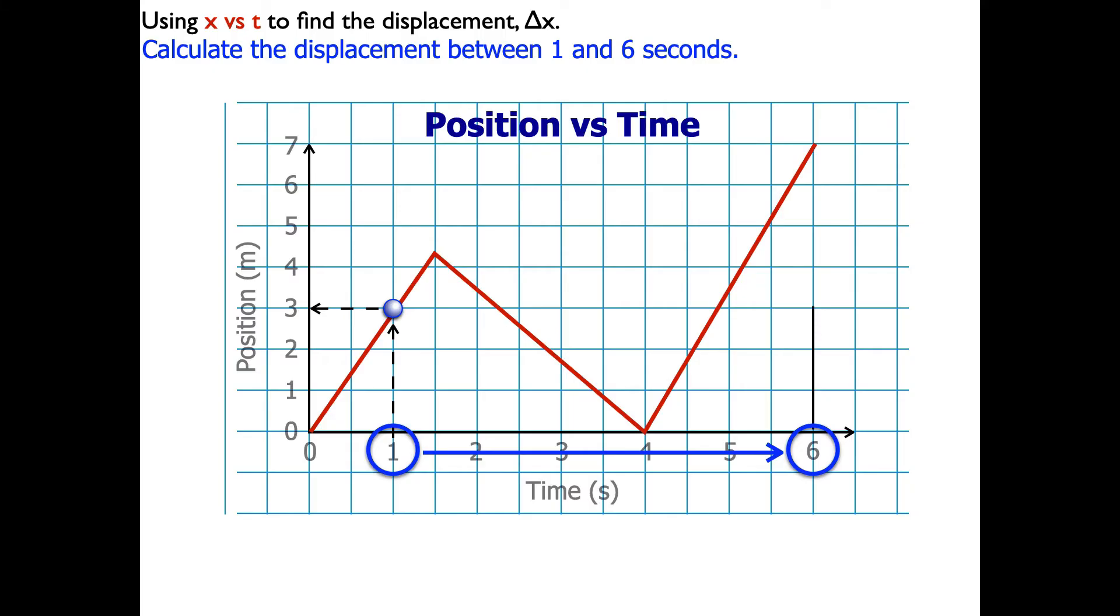And then at 6 seconds, I'll go up until I hit my line, and then go over, and that's 7 meters.